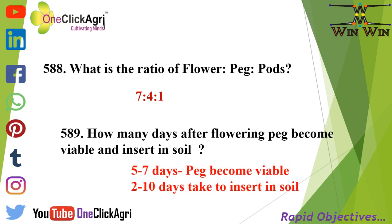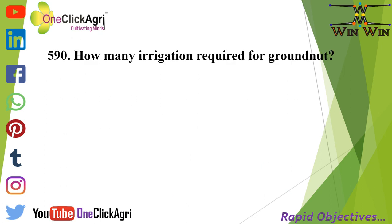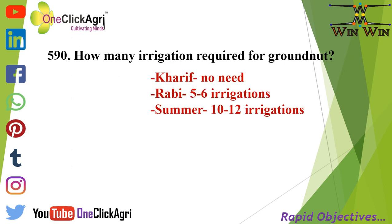A peg becomes viable in 5 to 7 days and takes 2 to 10 days to insert into the soil. How many irrigations are required for groundnut? Kharif — not required; Rabi — 5 to 6 irrigations; Summer — 10 to 12 irrigations.